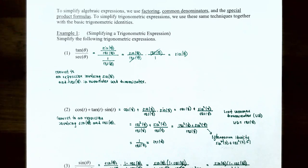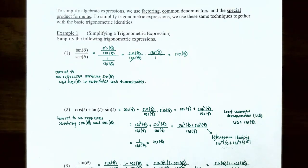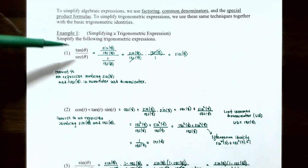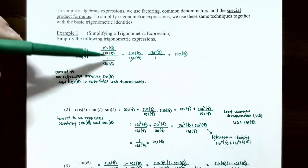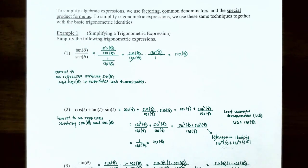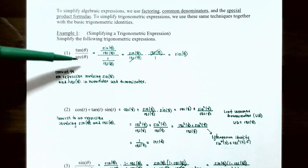Example one: simplify tangent of theta divided by secant of theta. We rewrite tangent of theta as sine of theta over cosine of theta, and secant of theta as 1 over cosine of theta. Dividing these two fractions, we multiply by the reciprocal: sine of theta over cosine of theta times cosine of theta over 1. The cosine of theta terms cancel, leaving sine of theta. So tangent of theta divided by secant of theta simplifies to sine of theta.